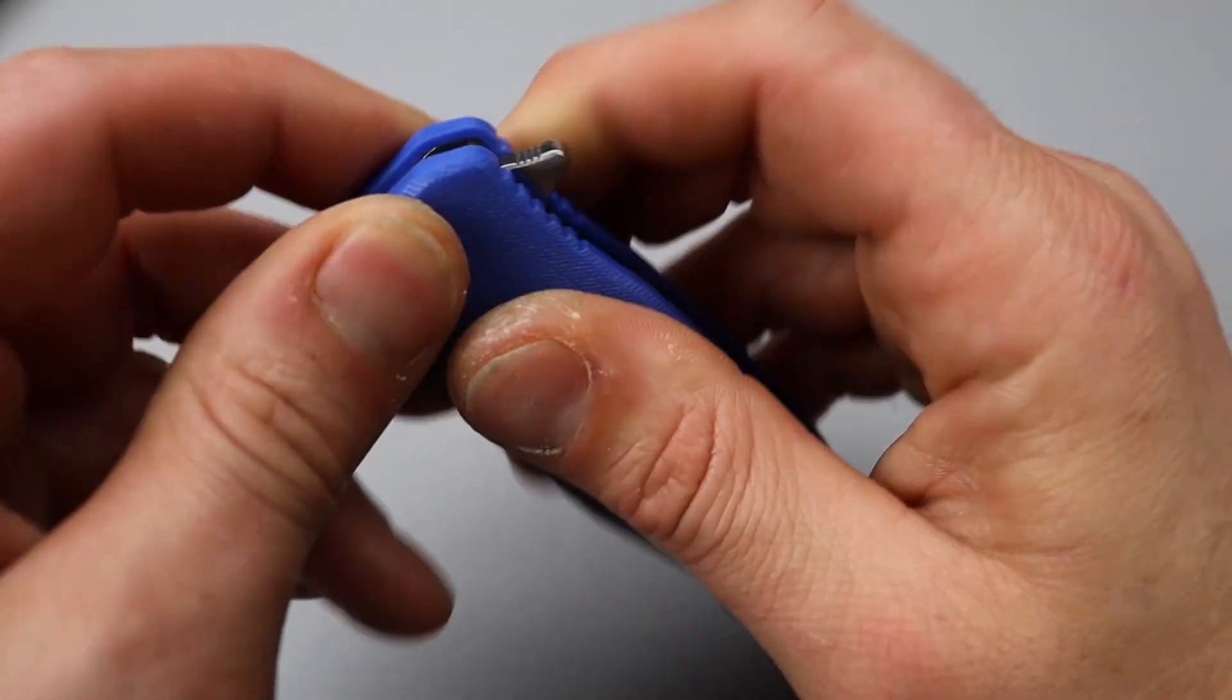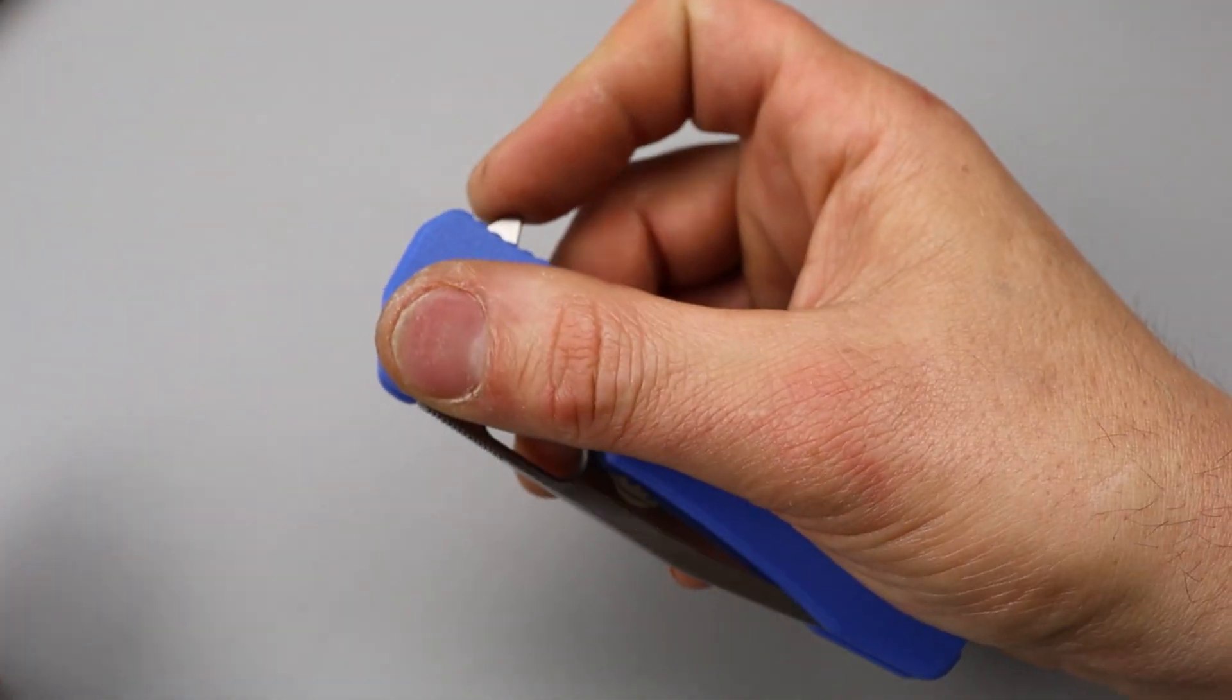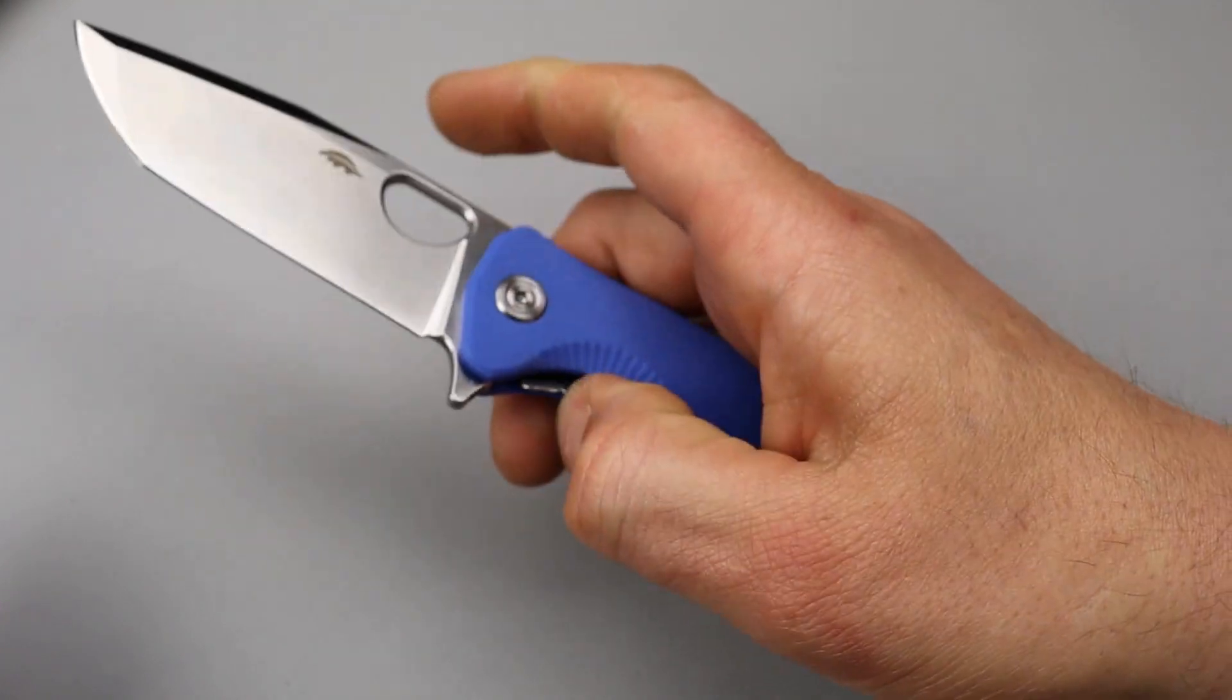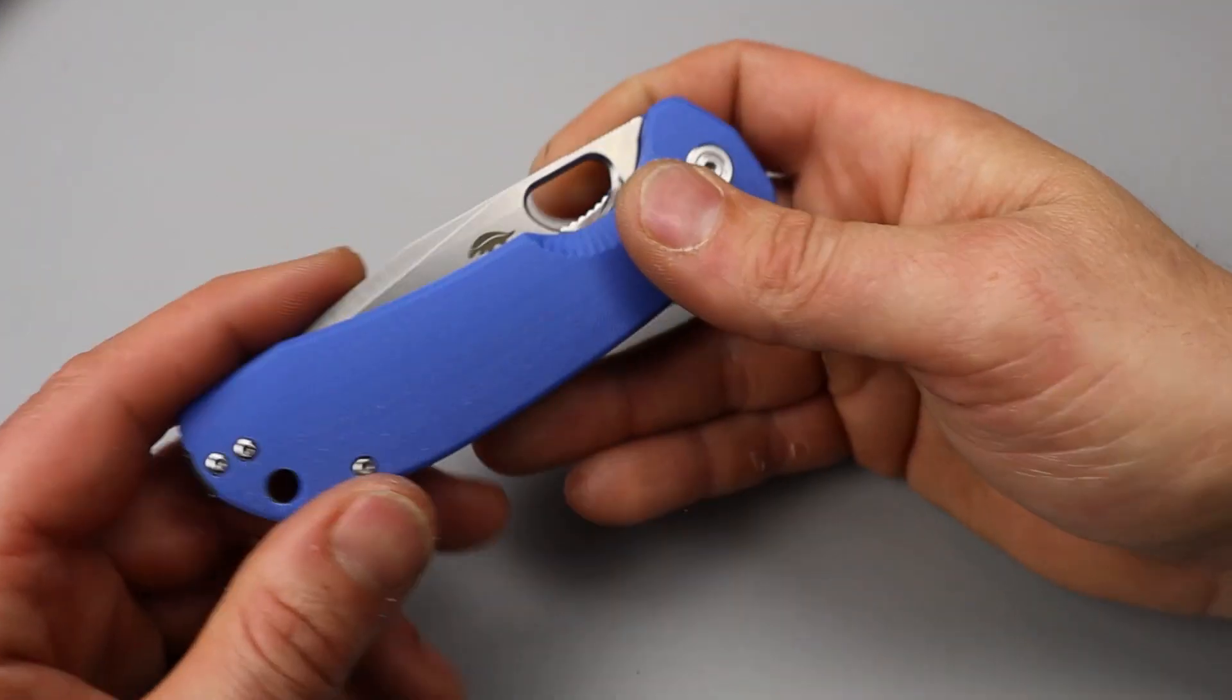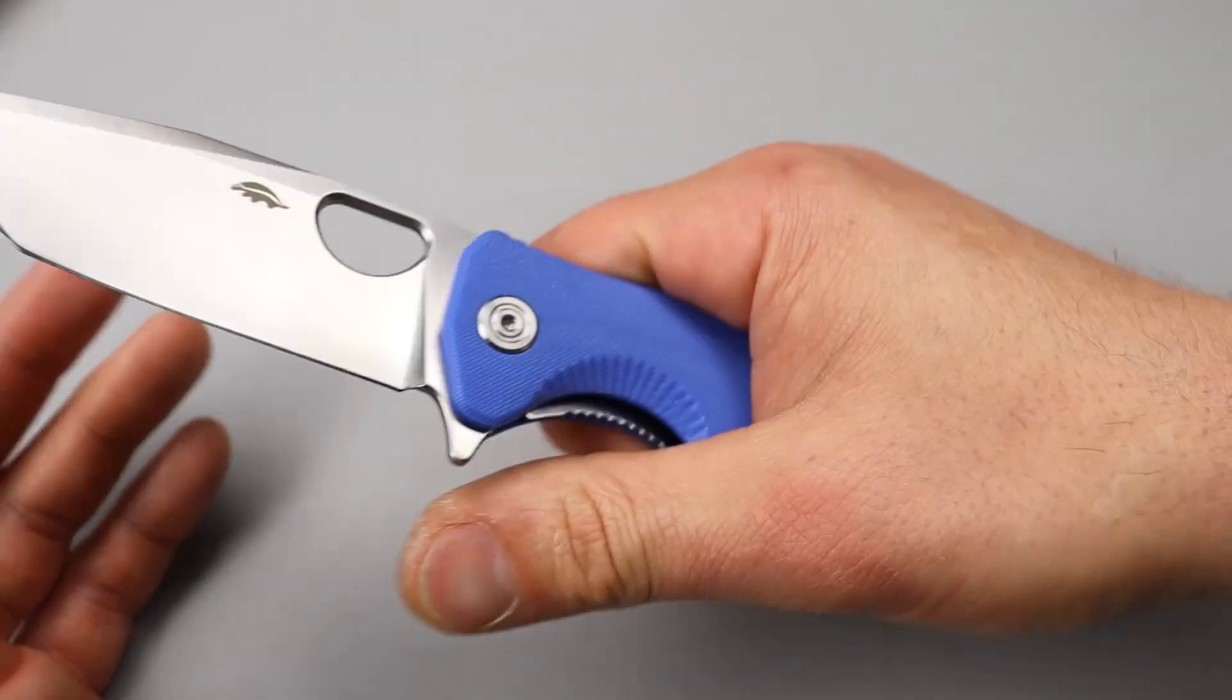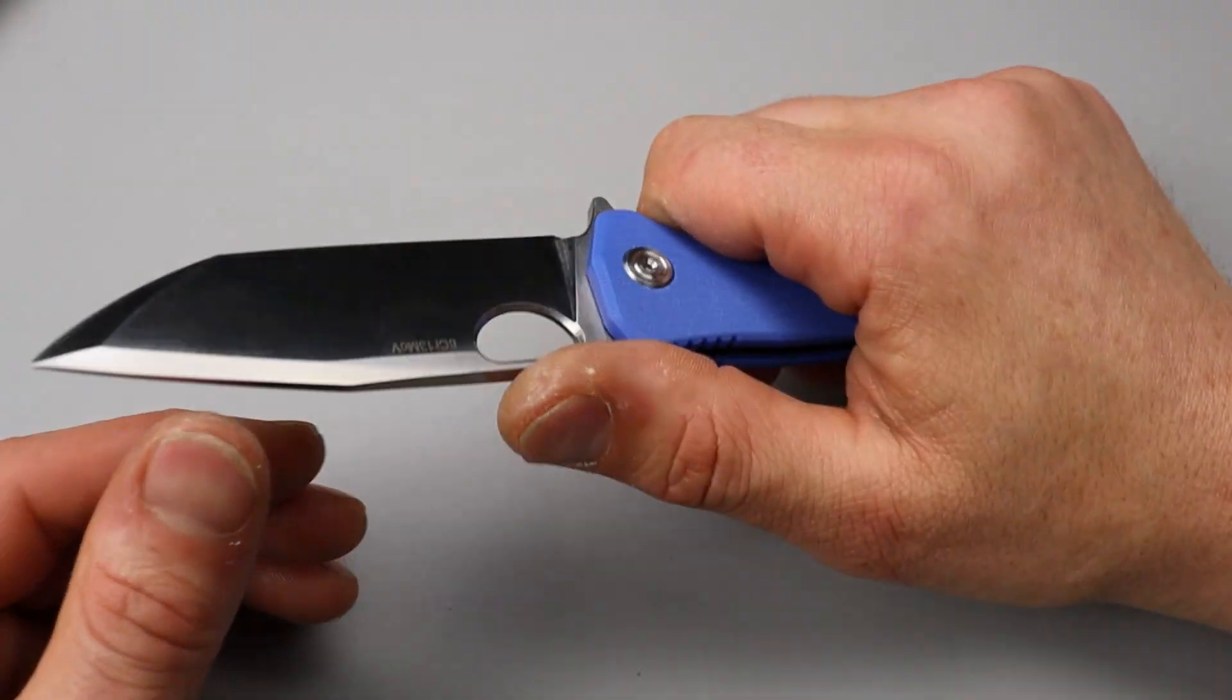The flipper tab has a solid detent. So, as soon as you deploy it, this thing comes out flying. Great action. I've always appreciated the action on the Honey Badger, especially for the price. You're getting premium action on a very affordable knife.